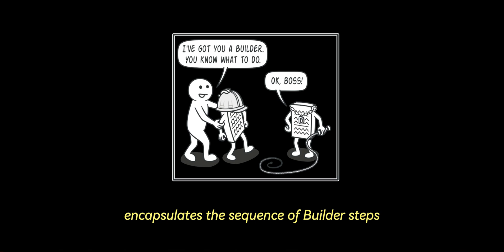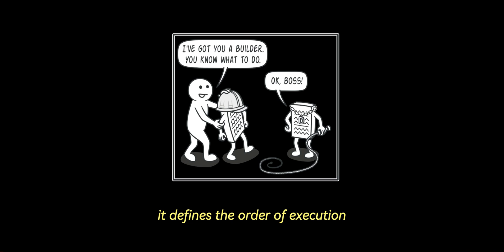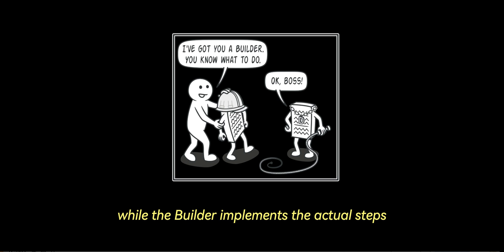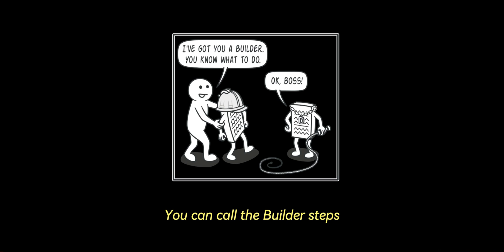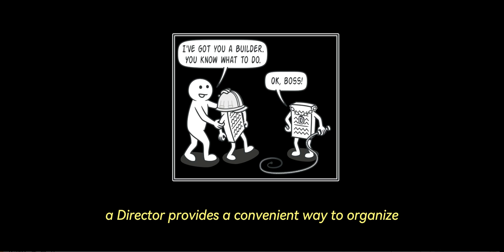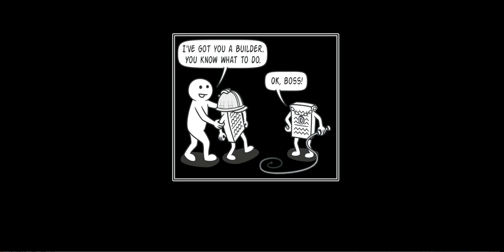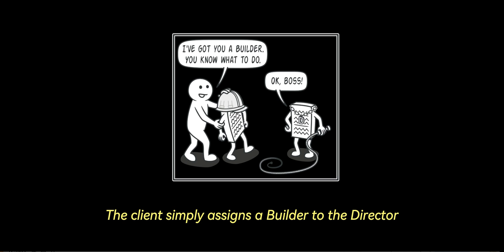The director class encapsulates the sequence of builder steps needed to construct a product. It defines the order of execution while the builder implements the actual steps. The director determines which steps are required to create a functional product. Using a director is not mandatory — you can call the builder steps directly from client code. However, a director provides a convenient way to organize and reuse construction logic across your program. Additionally, the director abstracts away the construction details from the client. The client simply assigns a builder to the director, starts the process, and retrieves the final product from the builder.